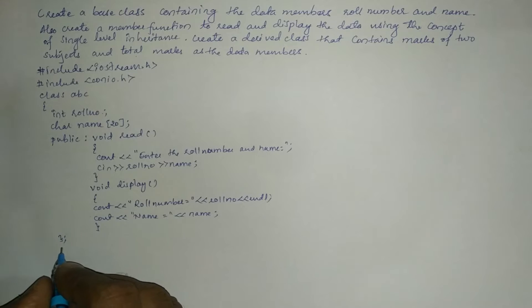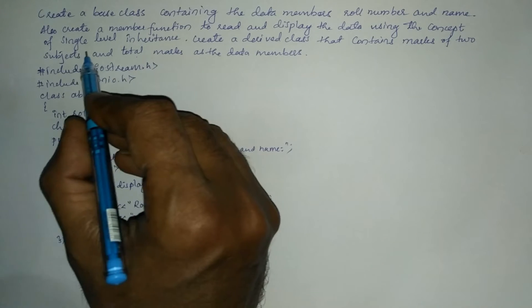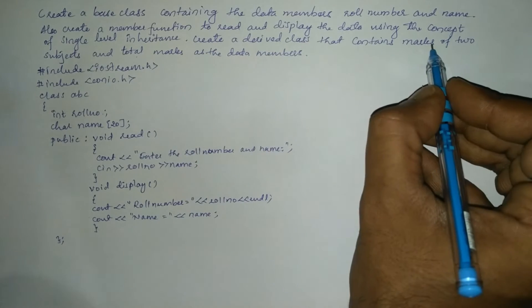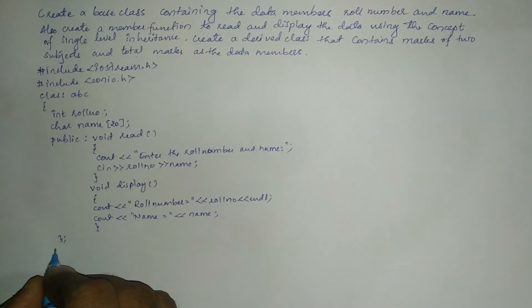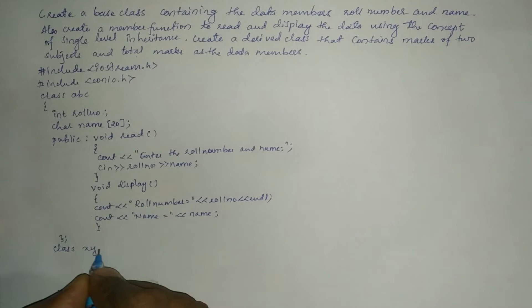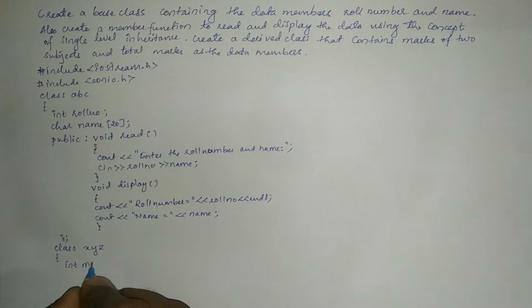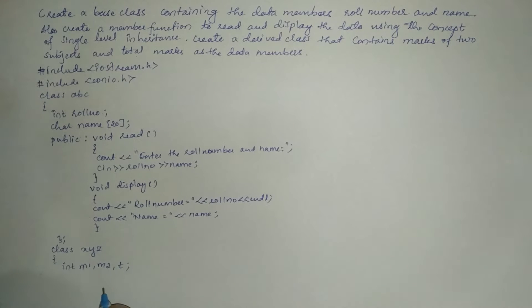Let us define one more class, that is the derived class. Using the concept of single level inheritance we have to create a derived class that contains marks of two subjects and total marks. So let us define one more class called XYZ. Inside the curly braces I am going to declare three variables: int m1, m2, and total marks as t.